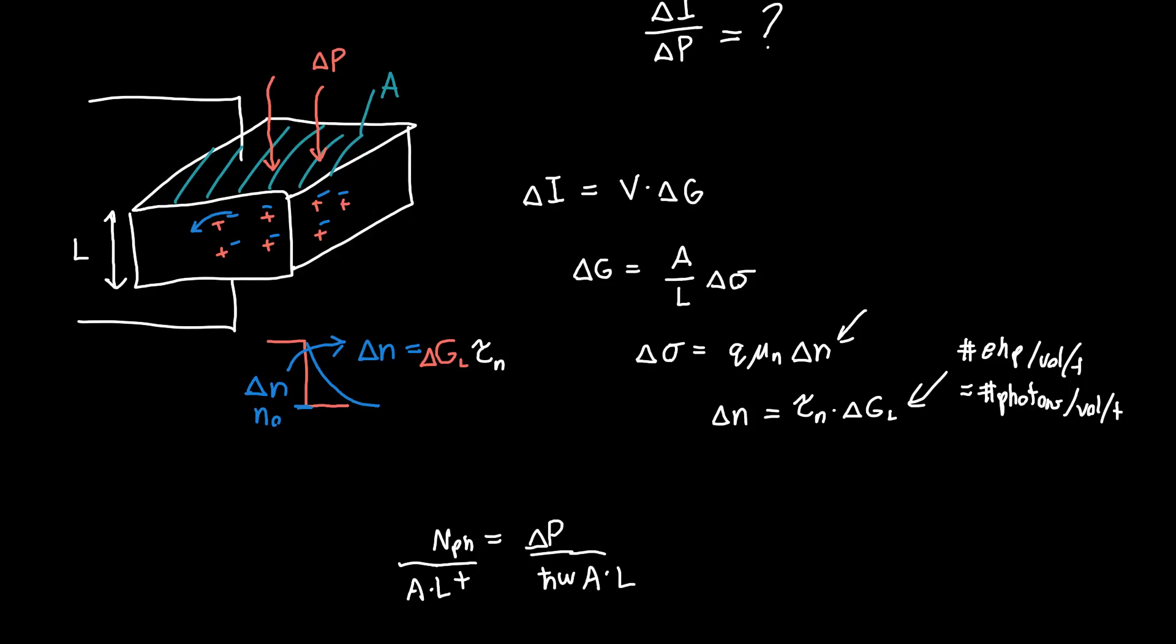This here is just delta G because it's the number of photons per volume per unit time that are absorbed by the semiconductor. So delta G_L is just equal to delta P over h-bar omega, the photon energy, times the area times the length.